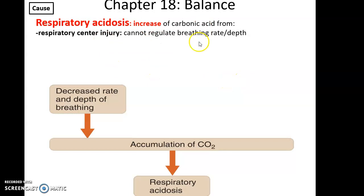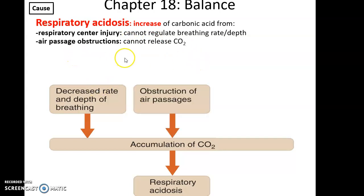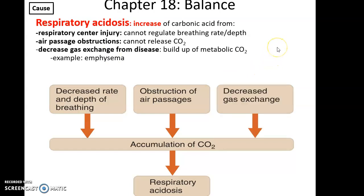Respiratory acidosis is the increase in the production of carbonic acid. You have a chronic decreased rate and depth of breathing, so less carbon dioxide is being lost when the person breathes, causing an accumulation of carbonic acid in the bloodstream. This could be caused by an injury to the respiratory center, an obstruction in air passageways, or a decrease in gas exchange from disease — for instance, someone with emphysema is not having as much gas exchange, so less carbon dioxide is being lost and it builds up.